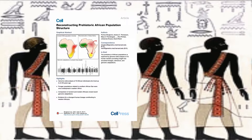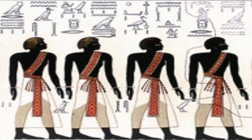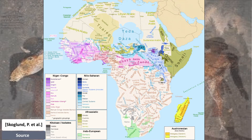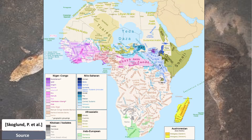Africa is more genetically diverse than any other part of the world. Today, some of the earliest branching African lineages are present only in populations with relatively small sizes, such as the Southern African Khoisan, Central African Rainforest Hunter-gatherers, and Hadza of Tanzania. Bantu-speaking agriculturalists originating in Western Africa are thought to have brought farming to Eastern Africa by 2,000 years ago and to Southern Africa by 1,500 years ago.